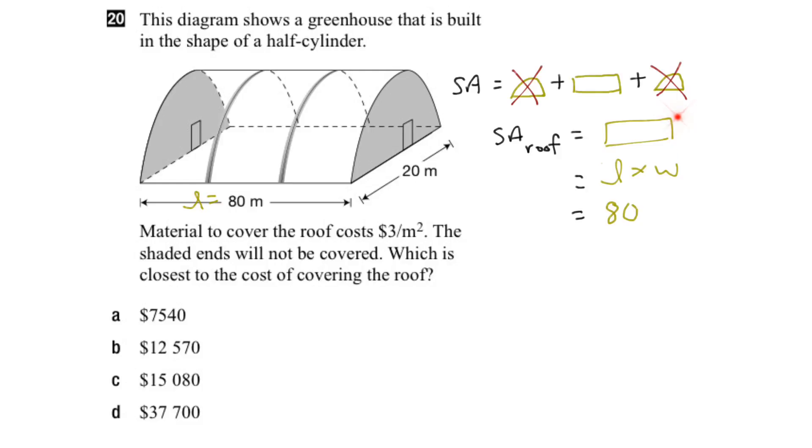Now what about the width, this distance here? Well that would be this whole part here, which is the circumference of half a circle. And the formula for the circumference of a circle is either 2πr or π times the diameter.